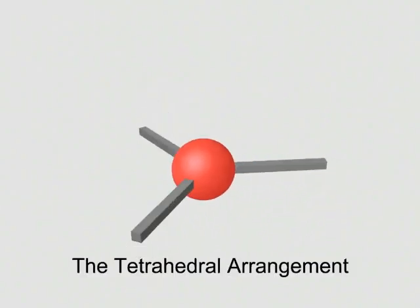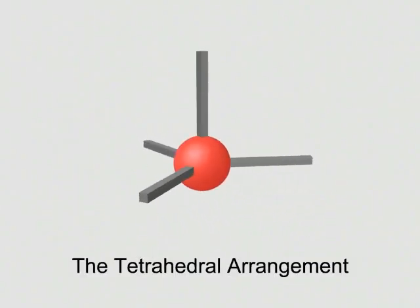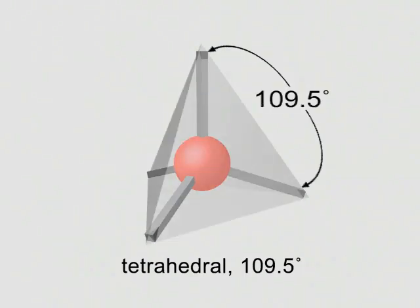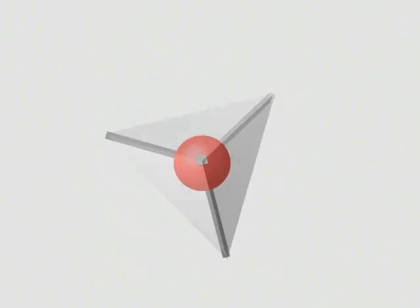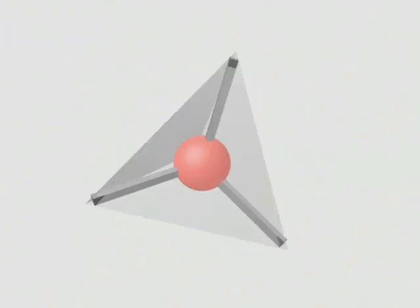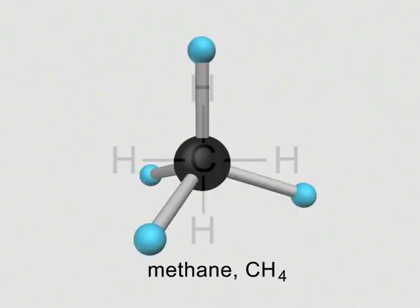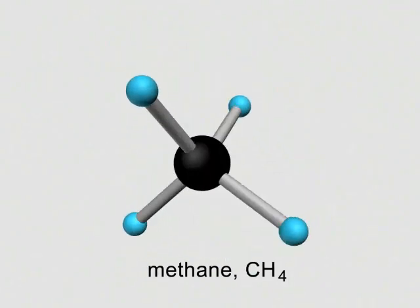Four electron groups around a central atom attain minimal repulsions in a tetrahedral arrangement, which has an ideal bond angle of 109.5 degrees. The tetrahedral shape is very common, especially in organic molecules. An example is methane, the simplest hydrocarbon.